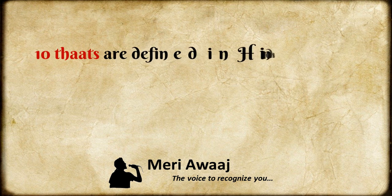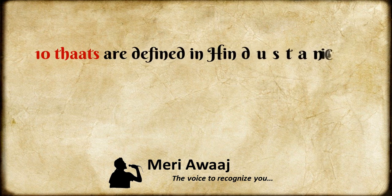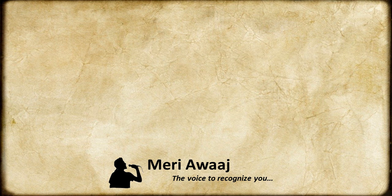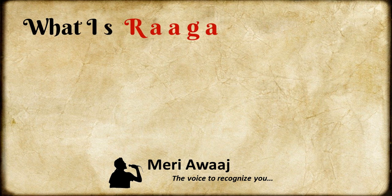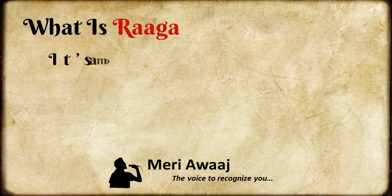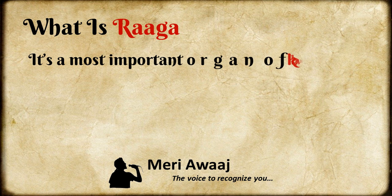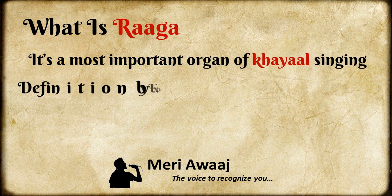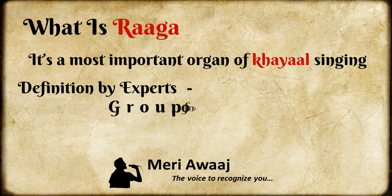The Thatas are also called scales. Raag is the most important organ of the khayal singing. Different patterns are created from the 12 Swaras or notes. From a classical point of view, the experts have defined raag as a group of notes set to certain rules which are delightful to the minds of people.